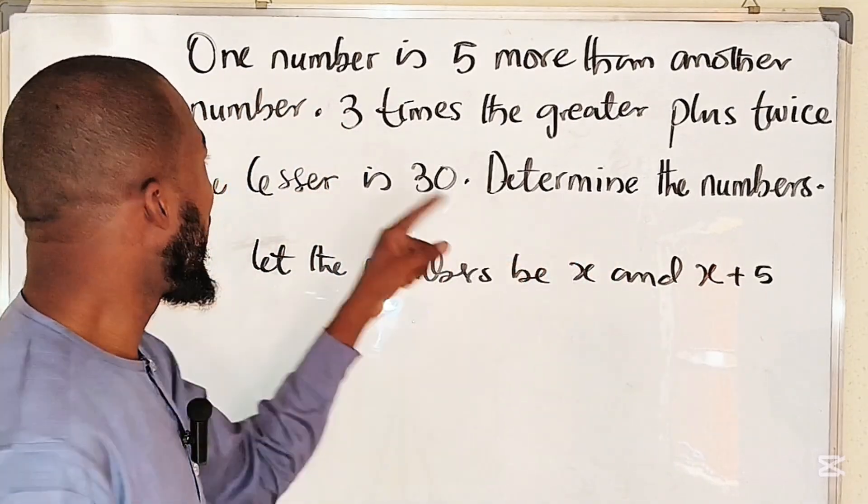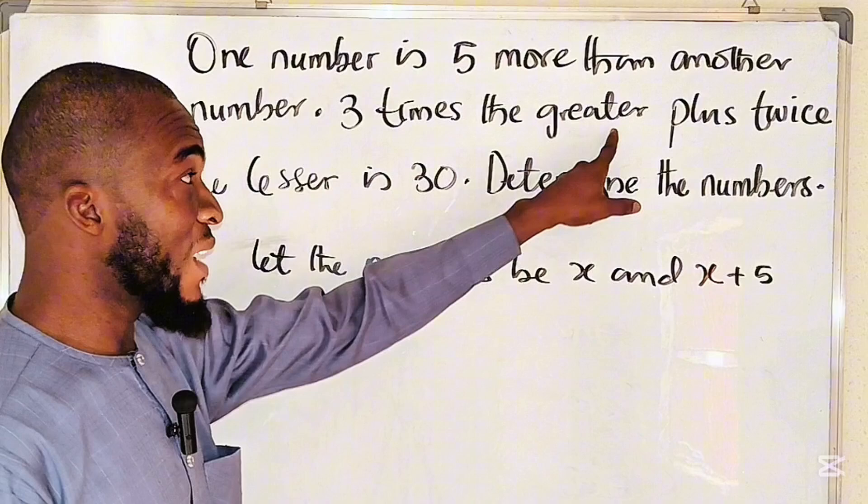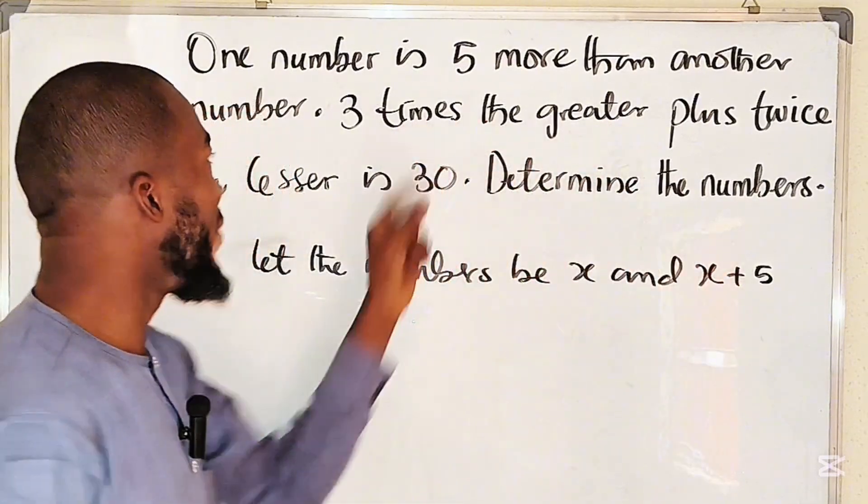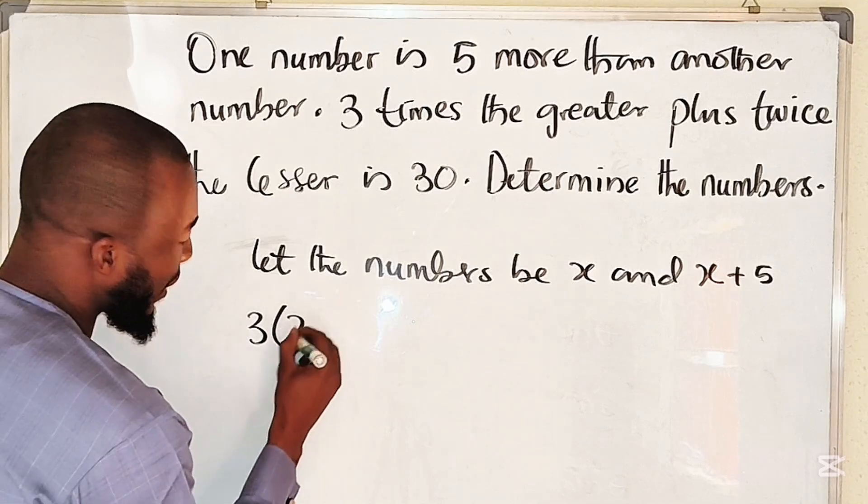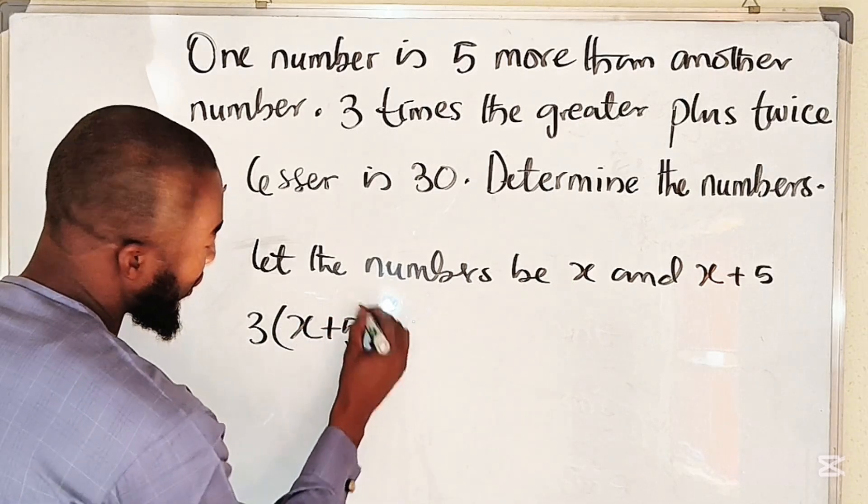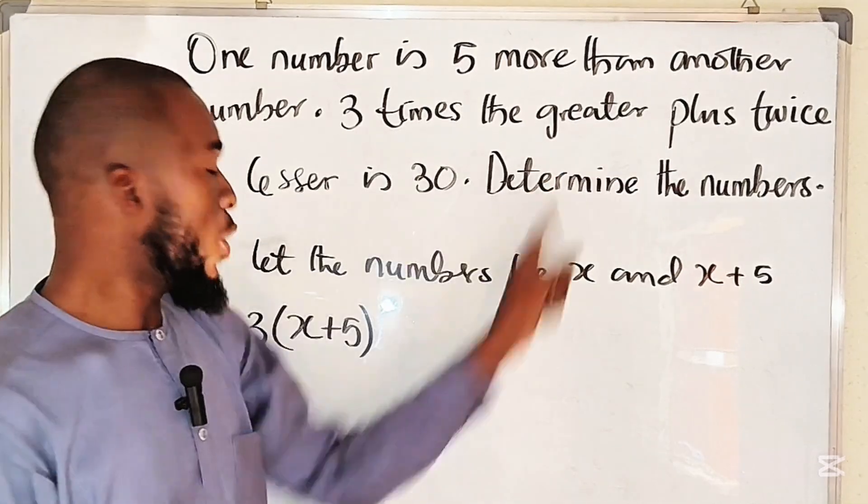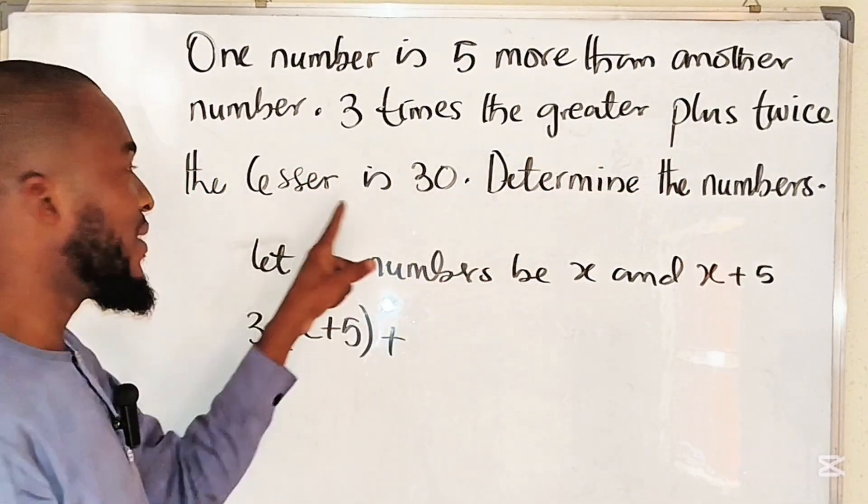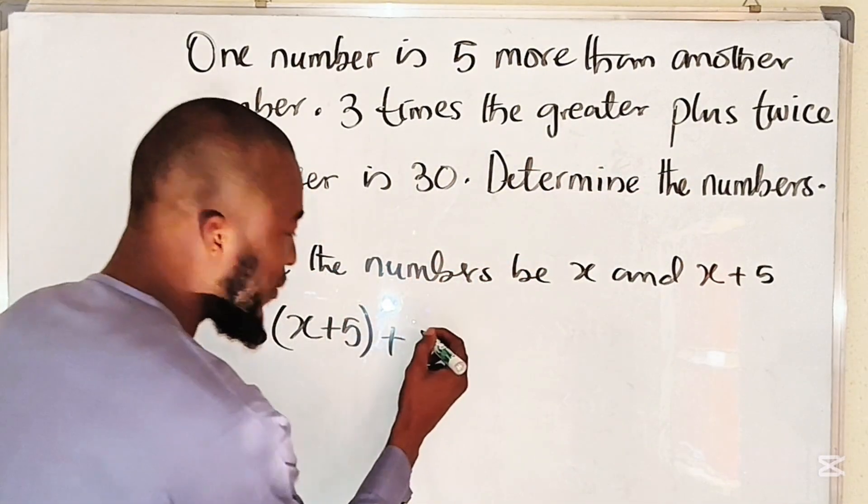Three times the greater—it means we should take the bigger number and multiply it by three. So we have three multiplied by x plus five, plus, according to the question, twice the lesser, two times the smaller number. The result is 30.